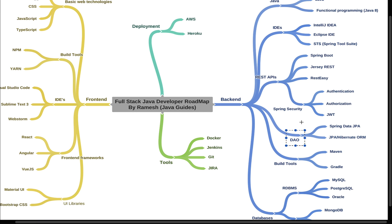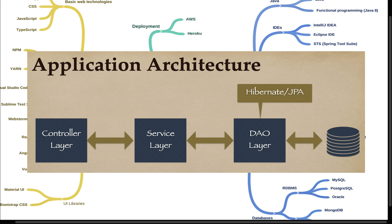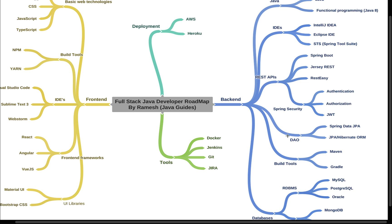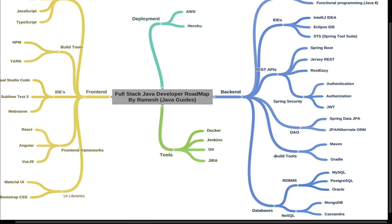In Java application development we typically have three layers: controller, service, and DAO. To develop the DAO layer you can use Spring Data JPA or JPA with Hibernate. I recommend Spring Data JPA because it reduces boilerplate code — you simply create an interface extending a Spring Data JPA repository and get full CRUD methods for a given entity. JPA with Hibernate requires writing a lot more code.